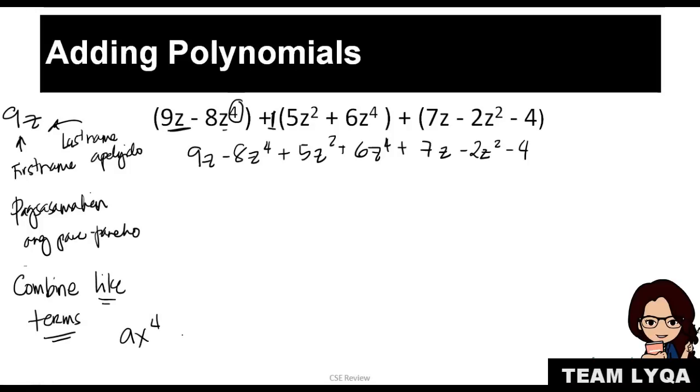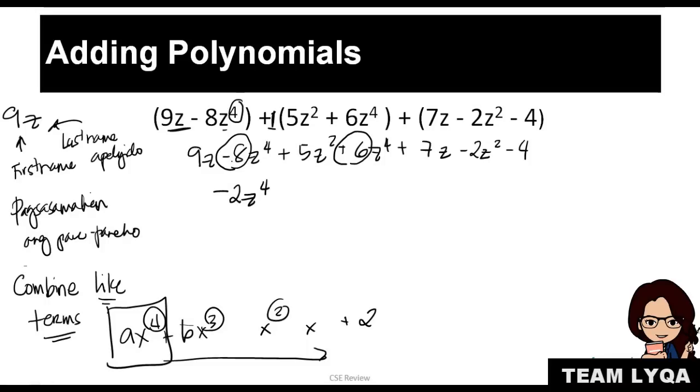For example, ax to the 4th plus bx to the 3rd, you get that, 4, 3, x squared, x, then just the number. That's the correct way to write exponents. What does this mean? To eliminate options that are impossible to be the answer, start with the biggest one. For example, 4 is the highest. Since it's all addition, nothing will change. So definitely that's the highest. You have negative 8 z to the 4th and plus 6 z to the 4th. So definitely the answer would be minus 2 z to the 4th.